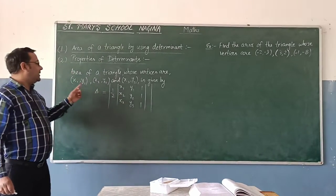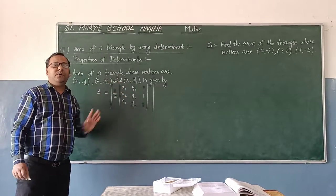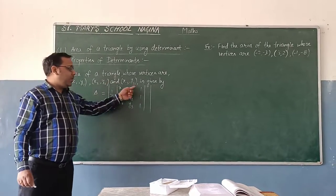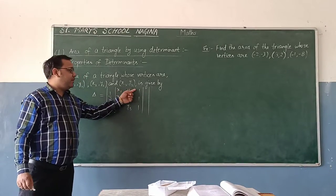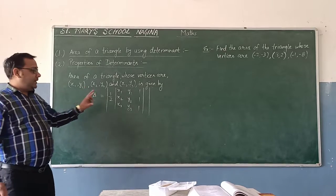While the y1, y2, y3 are the second coordinate or y-coordinates of the vertices of the triangle. Third column is fixed, always we have to take the value 1, 1, 1 in third column. It is fixed.